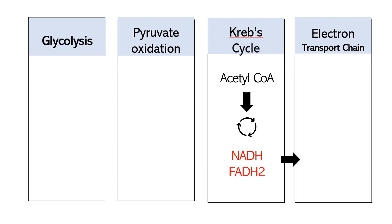Now we are in the Krebs cycle, or the citric acid cycle. This occurs in the mitochondria, known as the powerhouse of the cell. From pyruvate oxidation, acetyl-CoA reacts with oxaloacetate to form citrate, which is the starting point of the intermediates in the Krebs cycle. This biochemical process produces NADH and FADH2, which are high-energy electron carriers for the electron transport chain. The goal of the Krebs cycle is to produce NADH and FADH2.